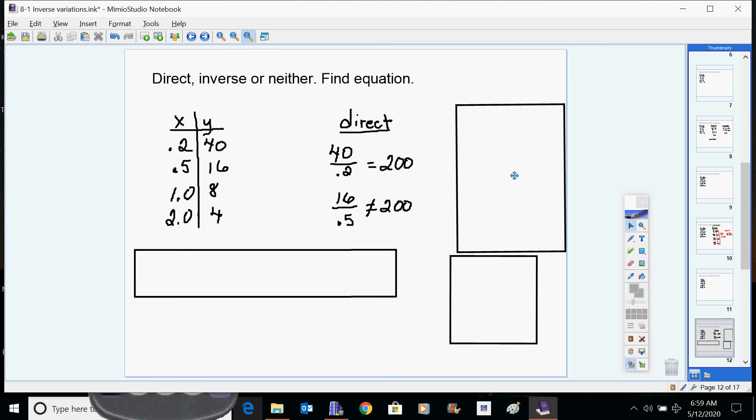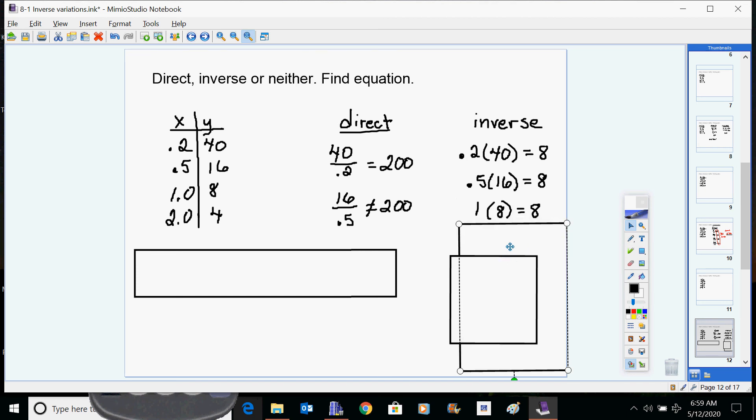We know it's not direct, but we can check then for inverse. 0.2 times 40 is 8, 0.5 times 16 is 8. Don't stop there though, you can't tell for sure until you've tried the others. 1 times 8 is 8, 2 times 4 is 8. So our equation then, K is 8. It's inverse, so the equation has to be based off of the inverse equation, which is y equals K over x. K over x. Here's your equation.